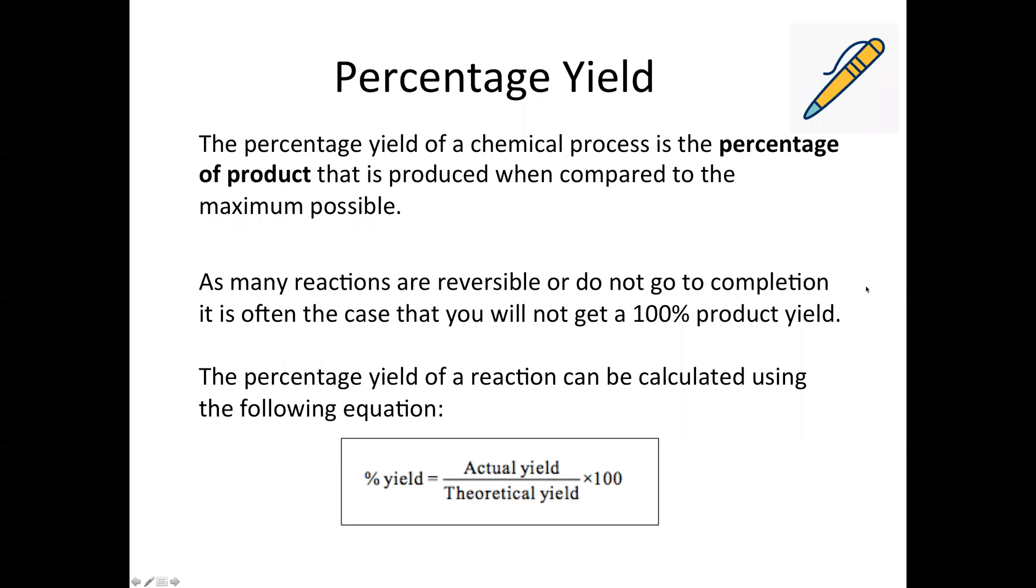So just as a bit of initial background, the percentage yield is the percentage of product that's produced when you compare that to the maximum possible product yield. Most reactions are reversible in organic chemistry so you tend not to get 100% product yield very often, which is why if you ever end up working with pharmaceuticals when you're doing organic chemistry reactions you'll end up calculating the percentage yield of almost every reaction that you ever do.